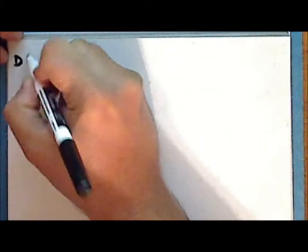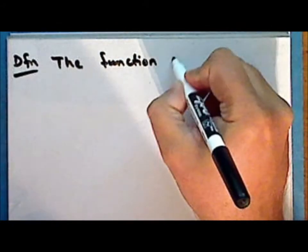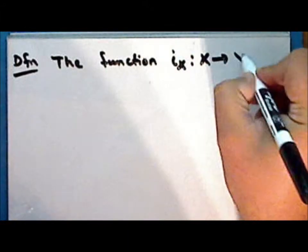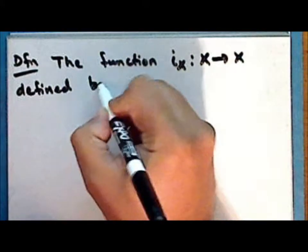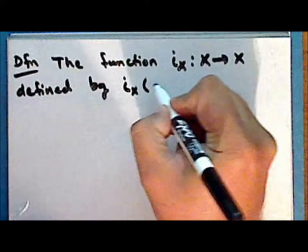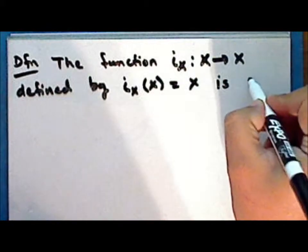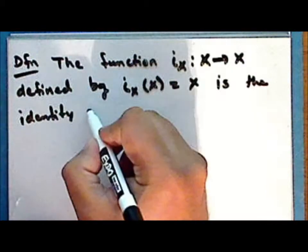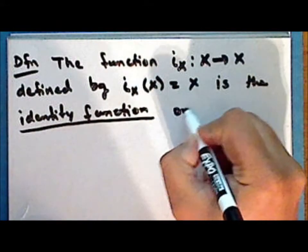New definition. The function, which we denote with a lowercase letter i and subscript X — a map from the set X back into itself — defined by i of x equals x, is the identity function on the set X.